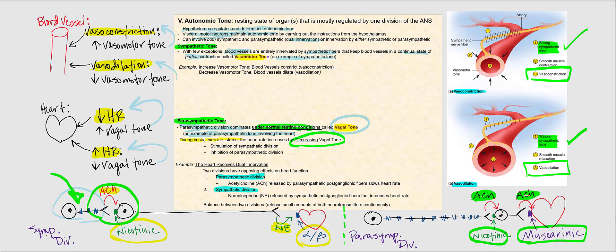To locate the axons of this parasympathetic pre-ganglionic neuron, we find them in the vagus nerve — cranial nerve number 10. The synapsing between the parasympathetic pre-ganglionic neuron and the parasympathetic post-ganglionic neuron occurs at the intramural ganglion, which is found in the wall of the heart.